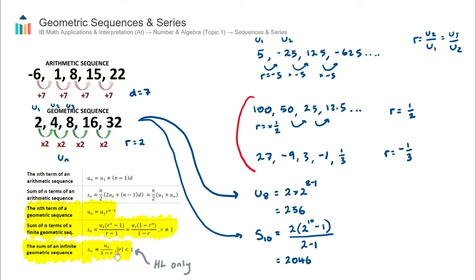That's what this infinite sum formula represents. As an exercise, try finding the sum of the first 10 terms, then the first 20, then the first 30 terms of this sequence. You'll notice that as the number of terms gets bigger, the sum remains essentially the same, because every additional term is extremely small. That concludes the video on geometric sequences and series.